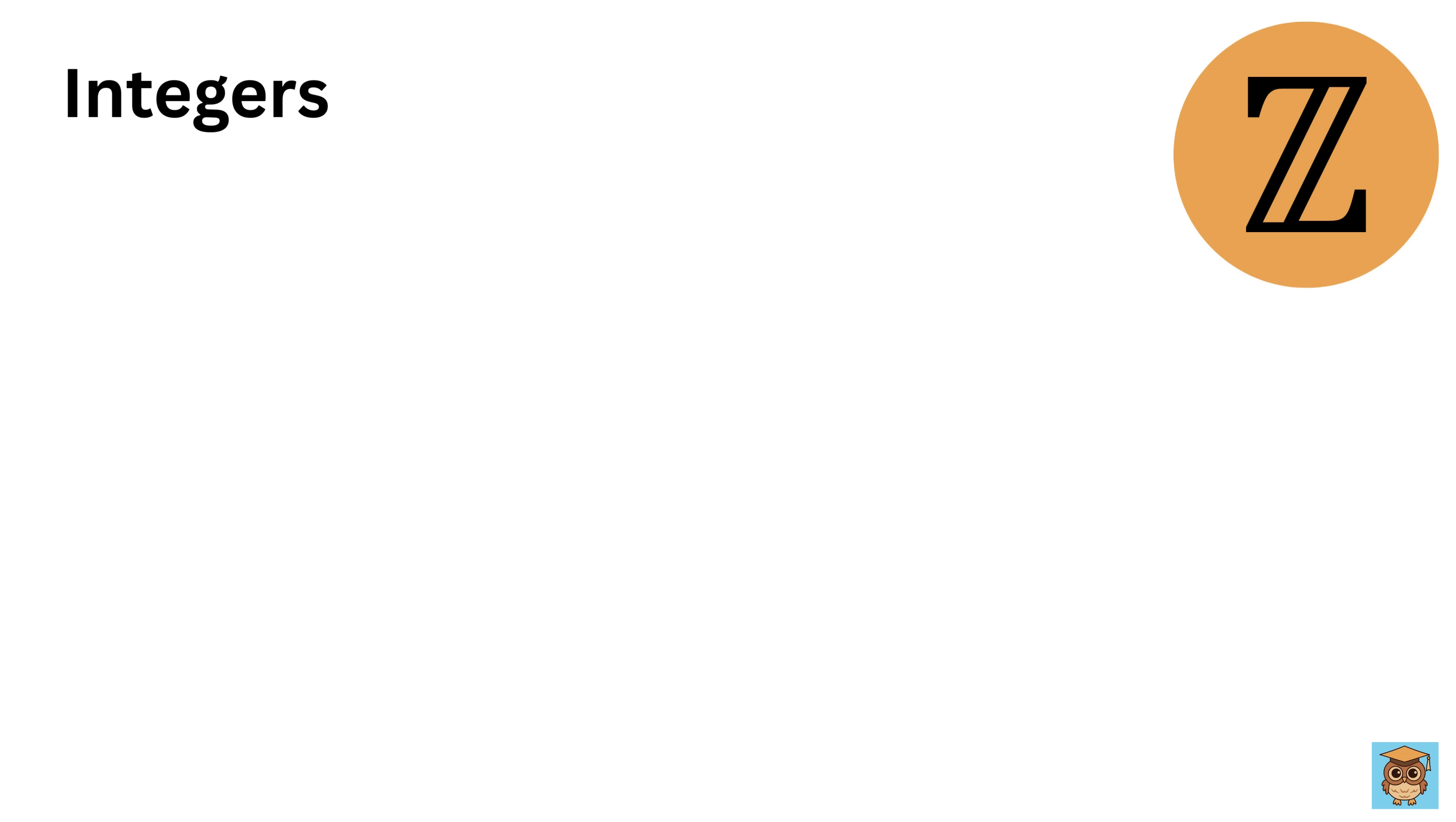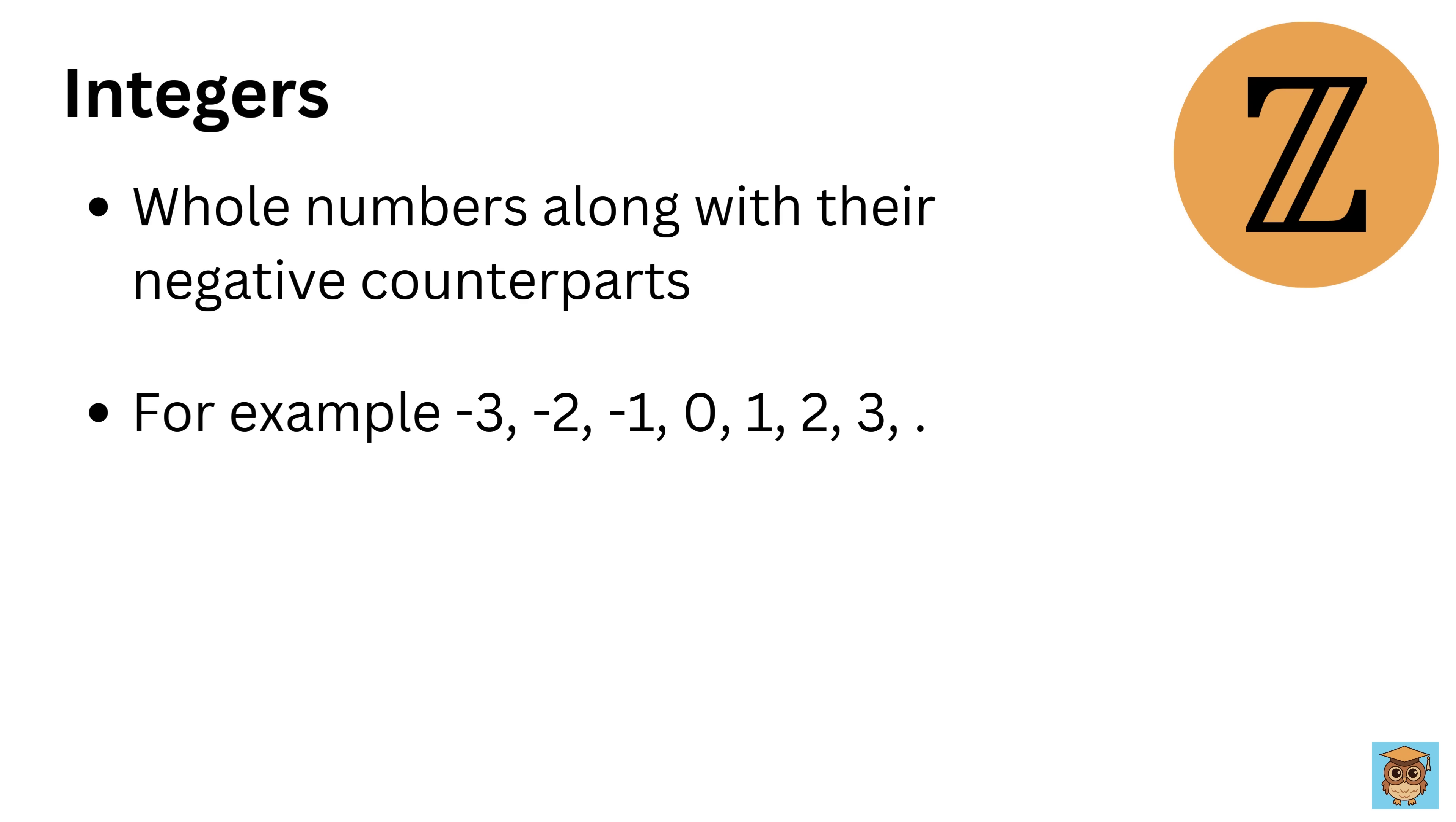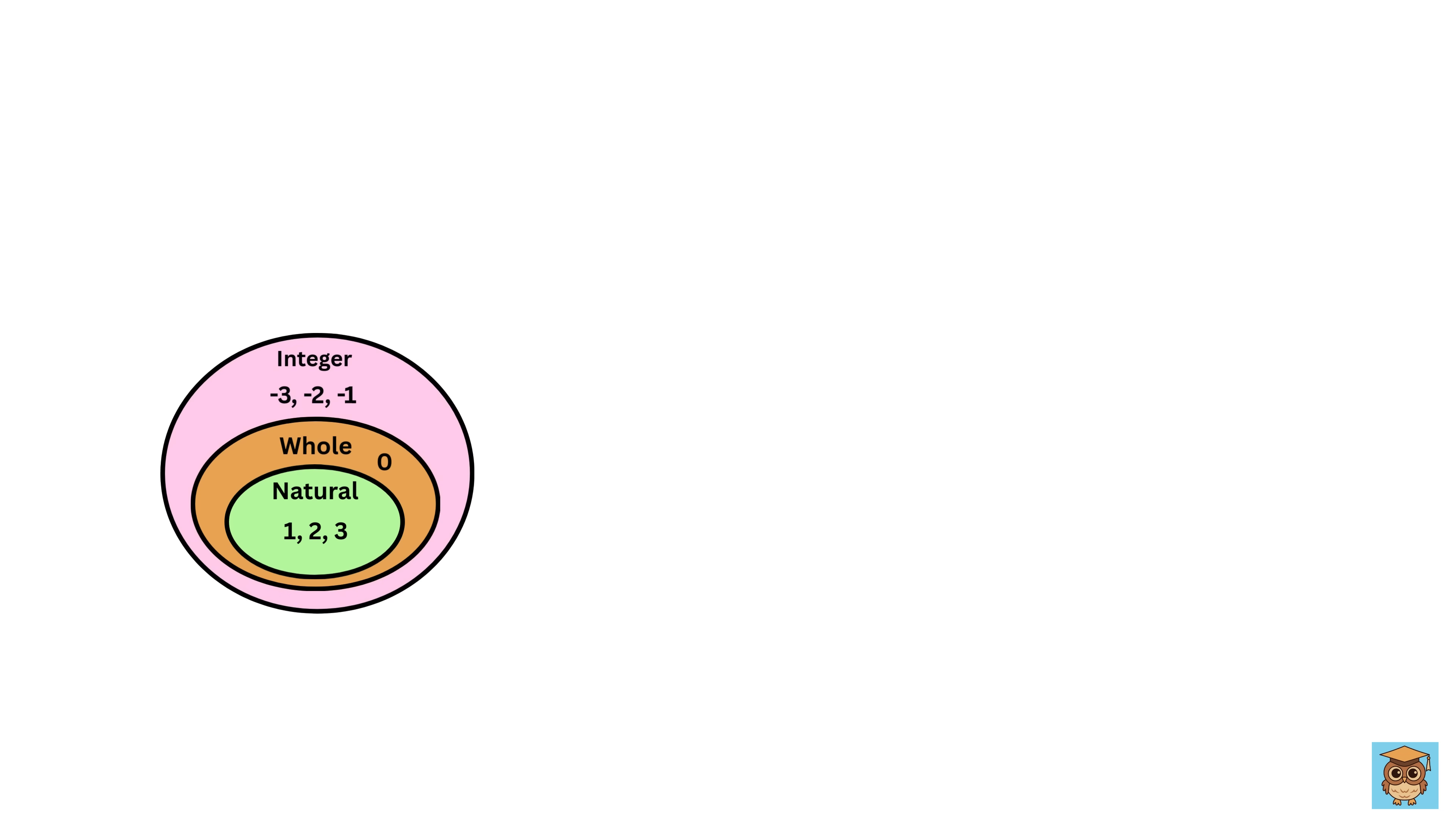Integers are the complete set of whole numbers along with their negative counterparts. This includes -3, -2, -1, 0, 1, 2, 3, and so on. Integers do not include any fractions or decimals.